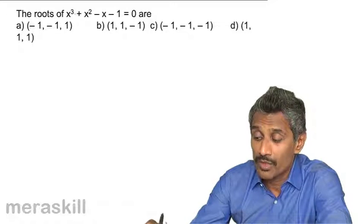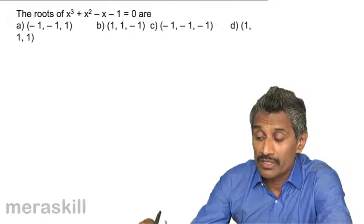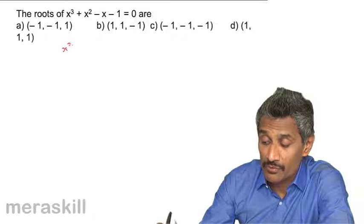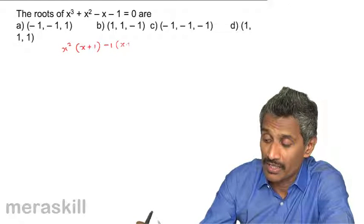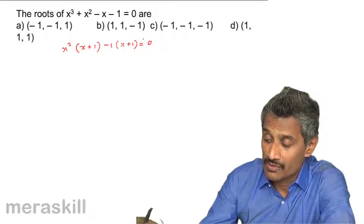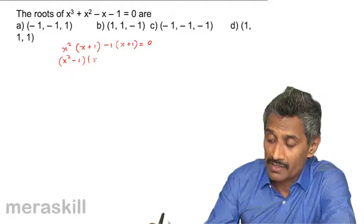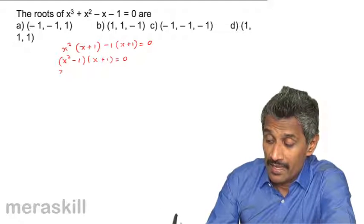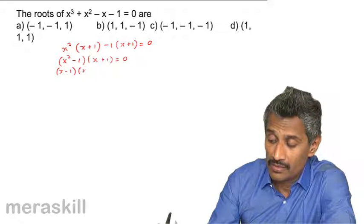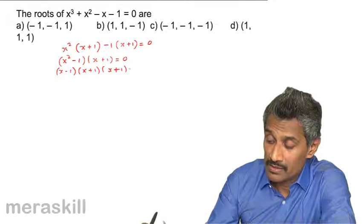Looking at the first two terms, we can take x² as a common factor and get x² (x + 1). From the last two terms, we take -1 common and get -1(x + 1) = 0. This means (x² - 1)(x + 1) = 0, which becomes (x - 1)(x + 1)(x + 1) = 0.